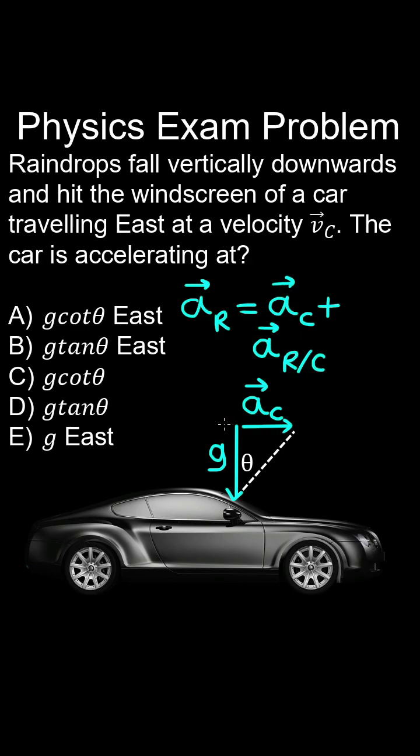Where we have the acceleration of the car plus the acceleration of the raindrop relative to the car, so using the head-to-tail method of vector addition is equal to the acceleration of the raindrop being g in a vertical direction.